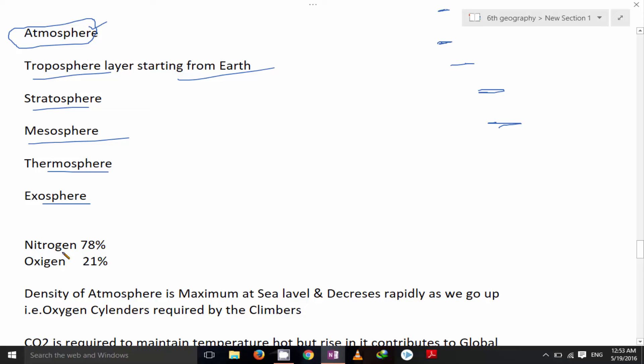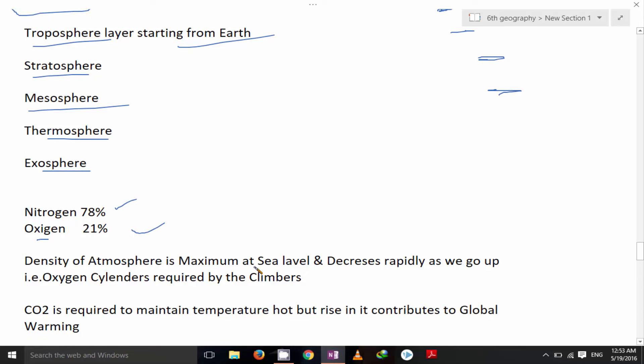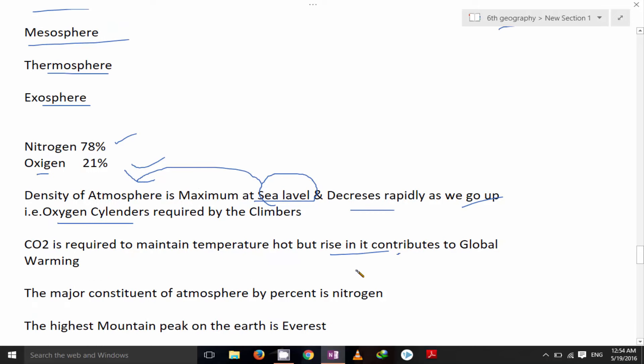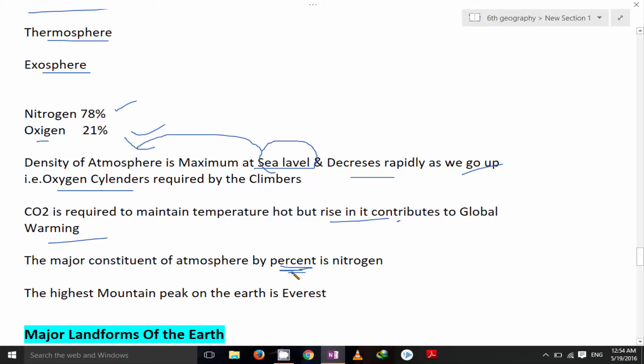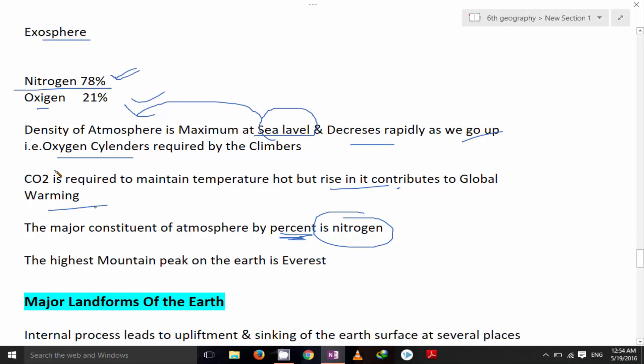Nitrogen, we have the nitrogen in atmosphere 78%, oxygen that is 21%. The density of atmosphere is maximum at sea level and decreases rapidly as we go up. That is why the climbers uses the oxygen cylinder. CO2 is required to maintain the temperature hot but rise in it contribute to global warming. The major constituents of atmosphere by percent is nitrogen. The highest mountain peak on the earth is Everest.